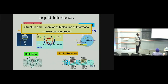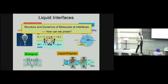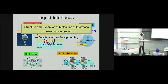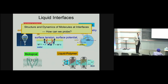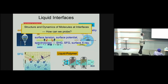Liquid interfaces are also quite relevant to biological or polymer interfaces. My basic question is: how do we understand the structure and dynamics of molecules at interfaces? Probing the interface itself is a challenge. Surface tension and surface potential are very traditional properties and provide lots of information, but microscopic interpretation is very challenging.